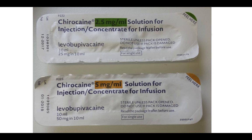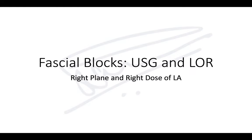The choice of local anesthetic and concentration is up to you. Lower concentration like 0.25% takes longer for onset. With intrafascicular injection, higher concentrations are dangerous — not only does pressure cause injury, but local anesthetics like bupivacaine can cause vasoconstriction. Ropivacaine is safer, and lignocaine is even safer than that.